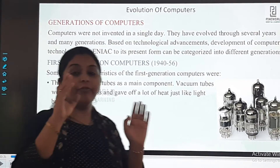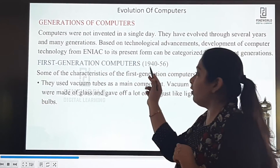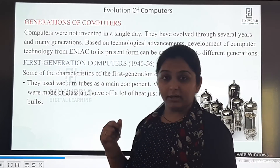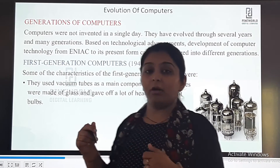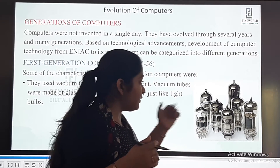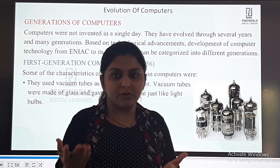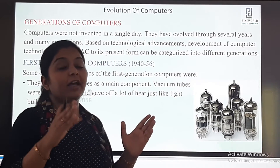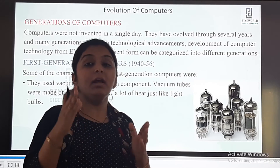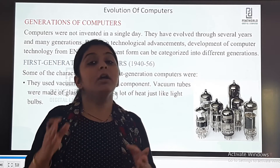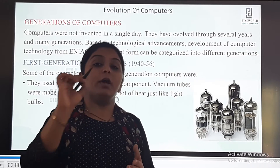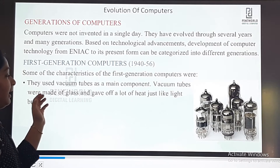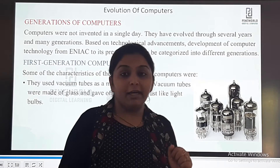The period of the first generation computer was from 1940 to 1956. The first generation computers used large vacuum tubes — you can see in the picture they are like light bulbs. Vacuum tubes were the main component in the first generation computer. You have to remember this — you can also underline it in your textbook. Vacuum tubes were made of glass and gave a lot of heat, just like light bulbs.